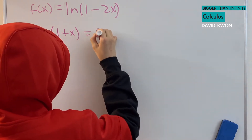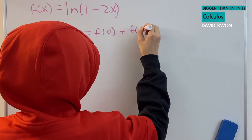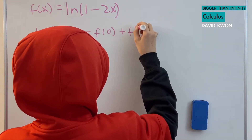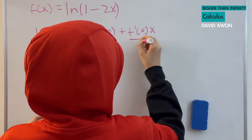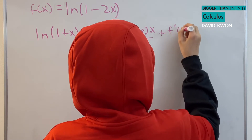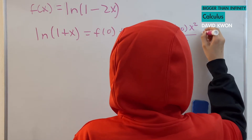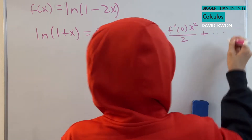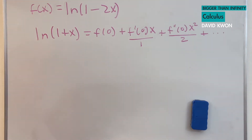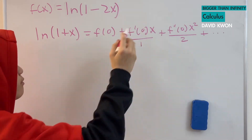That is equal to f(0) plus f'(0) times x over 1, plus f''(0) times x squared over 2, and then plus dot dot dot. So this is how it goes. We will find the value of f(0), then f'(0), and then f''(0).